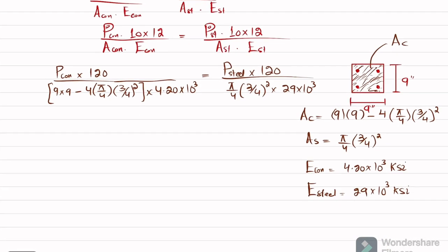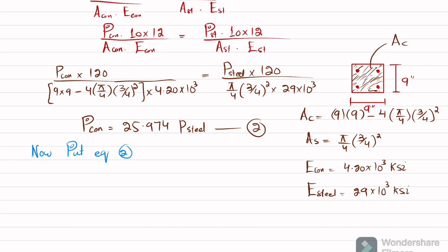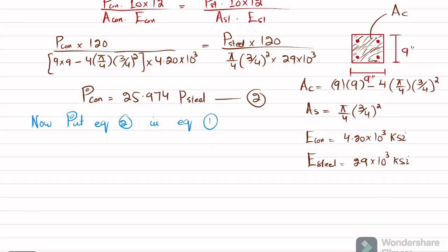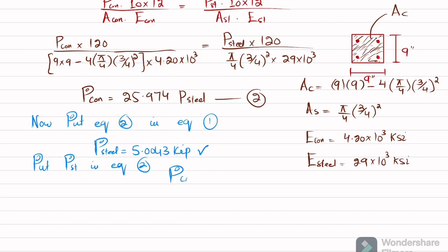When you calculate this, you get P_concrete = 25.974 × P_steel. This is Equation 2. Now substitute Equation 2 into Equation 1. Solving, you get P_steel = 5.0043 kips. Substituting back into Equation 2 gives P_concrete = 129.98 kips.